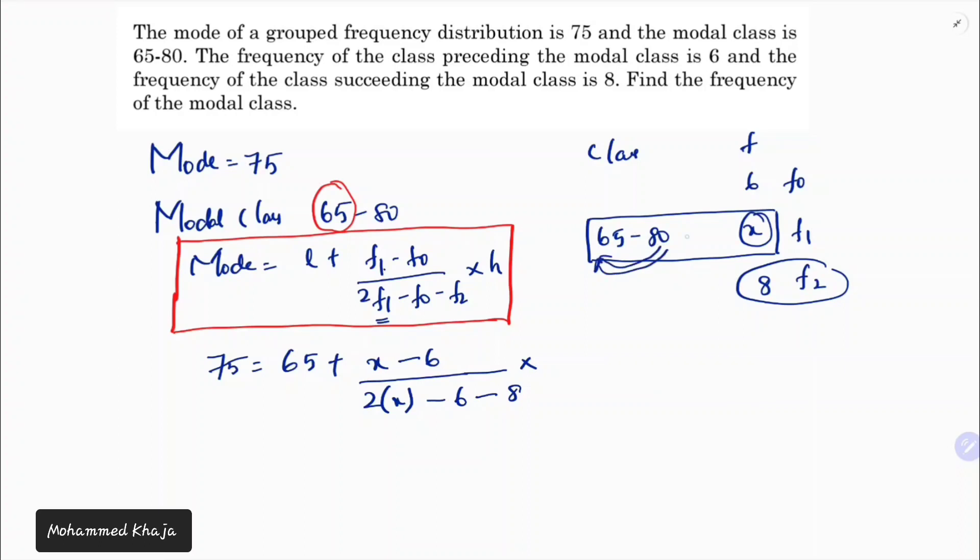Now 75 minus 65 equals (x minus 6) divided by (2x minus 14) times 15. 75 minus 65 is 10, so we have 10 equals (x minus 6) divided by (2x minus 14) times 15.